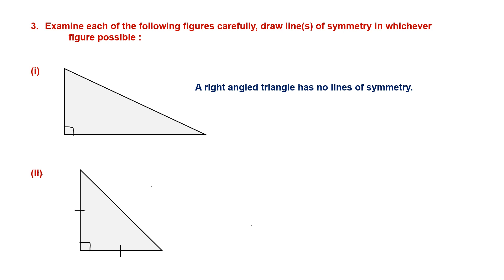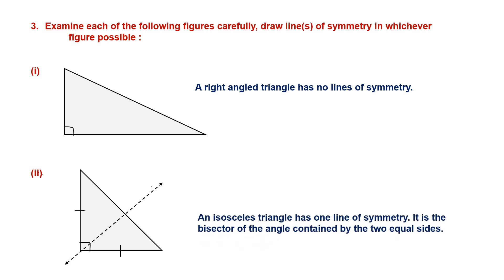The next figure is also a right-angled triangle, but it has two equal sides — so it is an isosceles right-angled triangle. It will have one line of symmetry, which is the bisector of the angle contained by the two equal sides.